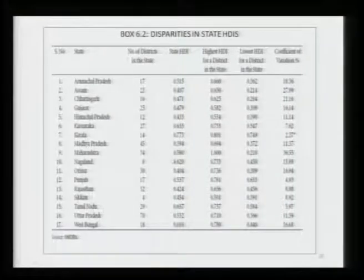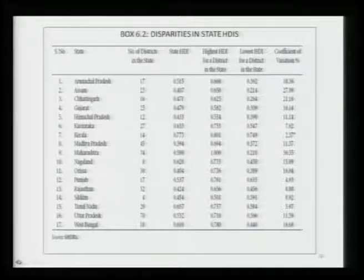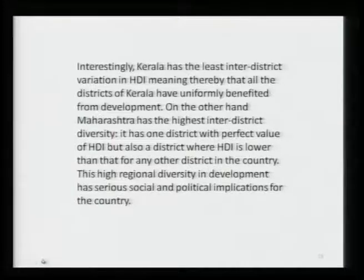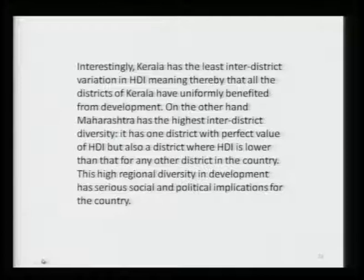Look at the figures for Maharashtra — it has a relatively good human development of 0.580, but also the highest coefficient of variation at 36.55. This is because in Maharashtra you have Mumbai, which is highly developed, and other districts which are as backward as UP or Bihar. Interestingly, Kerala has the least inter-district variation — not only does it have a high HDI value, but all districts have benefited from development more or less uniformly. On the other hand, Maharashtra has the highest inter-district diversity — one district with a very high HDI but also a district with the lowest HDI of any district in the country.